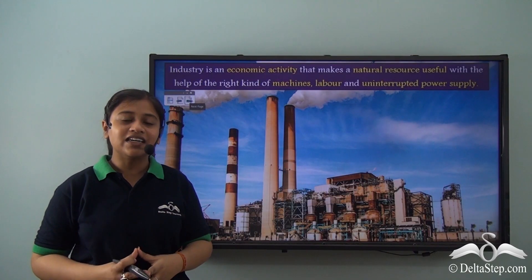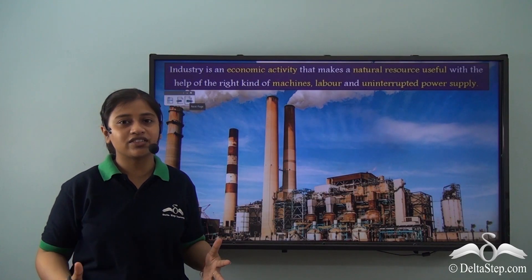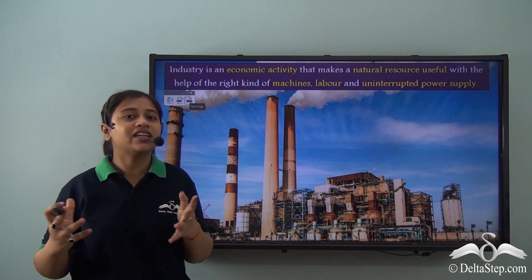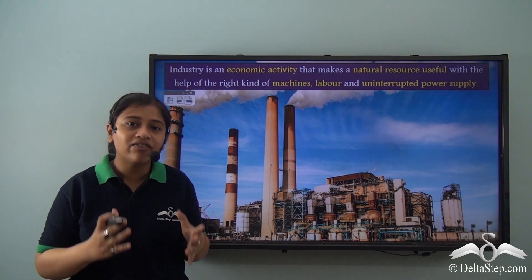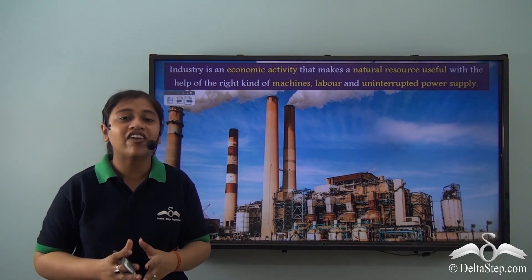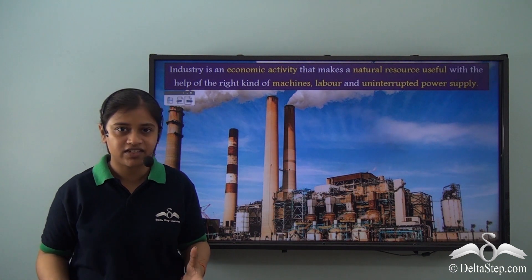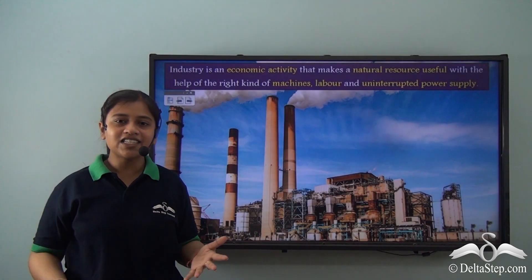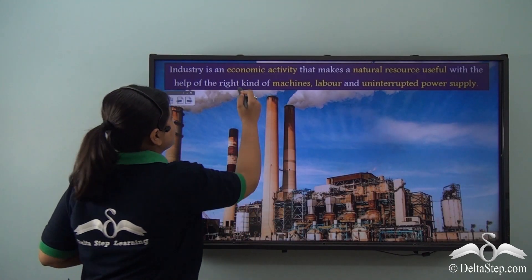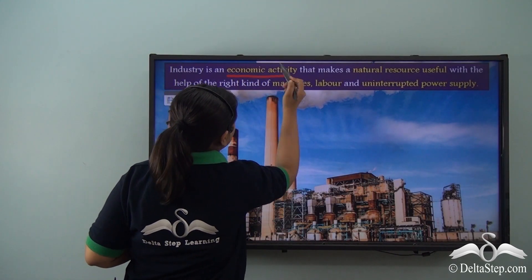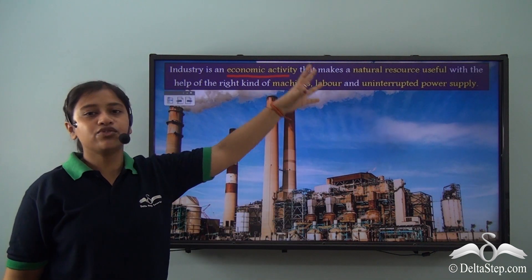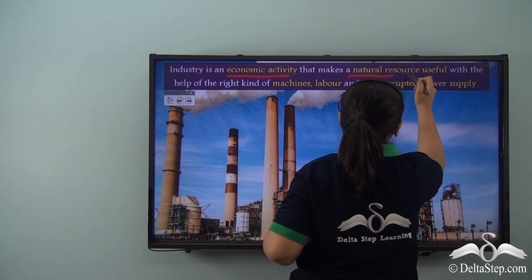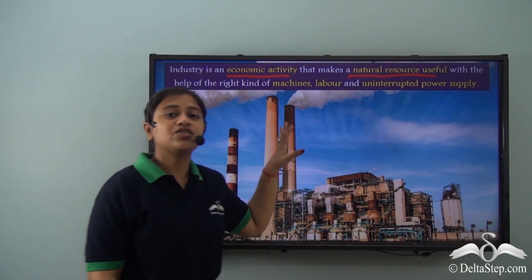In the last video we learnt how the industrial revolution has had a huge impact on the entire world — what industries are and how developing countries like India have benefited from the advent of industries. So just for a recap, let's see what an industry is. An industry is an economic activity that makes natural resources useful.